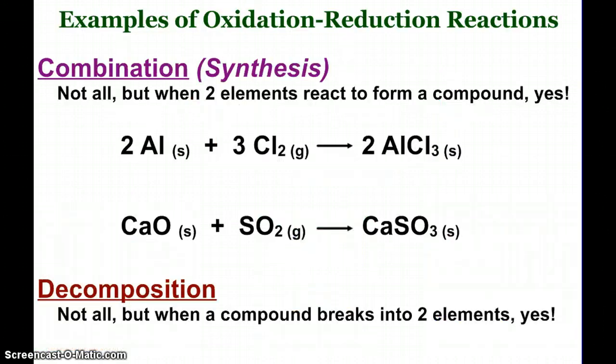So I'm just going to go through some examples of oxidation reduction reactions. Again, you have identified five major types of chemical reactions in Chem 1: combination or synthesis, decomposition, single replacement, double replacement, and combustion. And a lot of these are oxidation reduction.